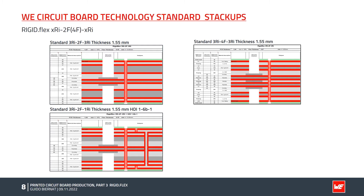The next stack-up also has the flex core in the middle, but the difference here is a 4F layer construction. The syntax is 3RI 4F 3RI — three rigid layers, four flex layers, and three rigid layers. For 4-layer flex constructions, the flex layers are bonded with a bond layer in the flex area.